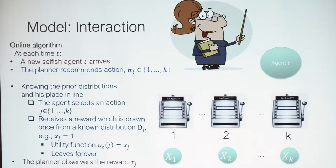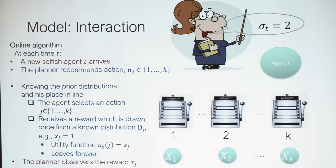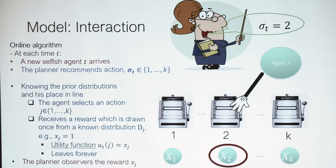The agent is aware of the prior distribution and his place in line. In the Stanford to Berkeley case, you probably know the usual delays on the roads — similarly, our agents are aware of the prior distribution. The agent receives a recommendation from the planner — say, action number two — and decides whether to follow. In our case, agent T decides to follow and receives a reward drawn from the prior distribution d_j. Let's say the reward was plus one, and the agent's utility u_t(j) equals the reward received.